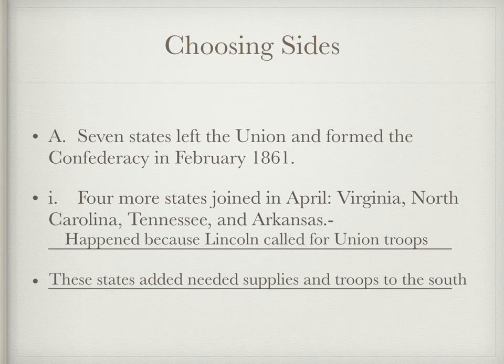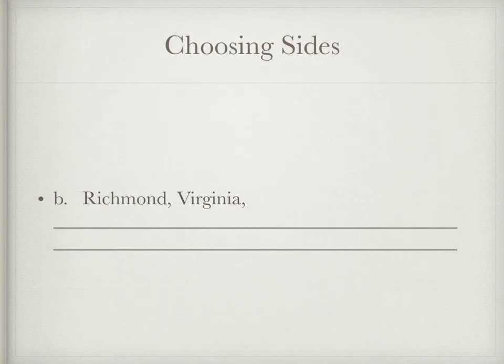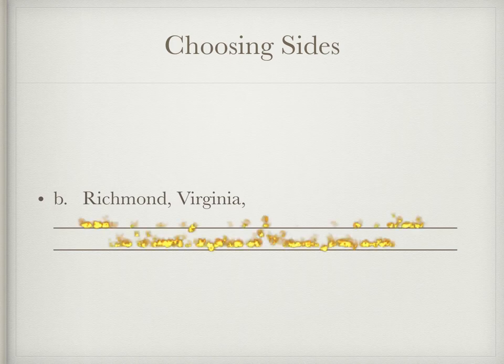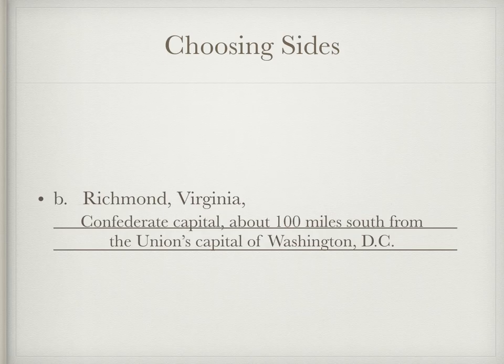These four states — Virginia, North Carolina, Tennessee, and Arkansas — added a lot of needed supplies and troops that were going to help the South in the long run. The capital of the Confederacy was Richmond, Virginia — a change from Montgomery, Alabama. They moved it to Richmond because it was only 100 miles south of DC, and they definitely wanted to be closer to the Union.